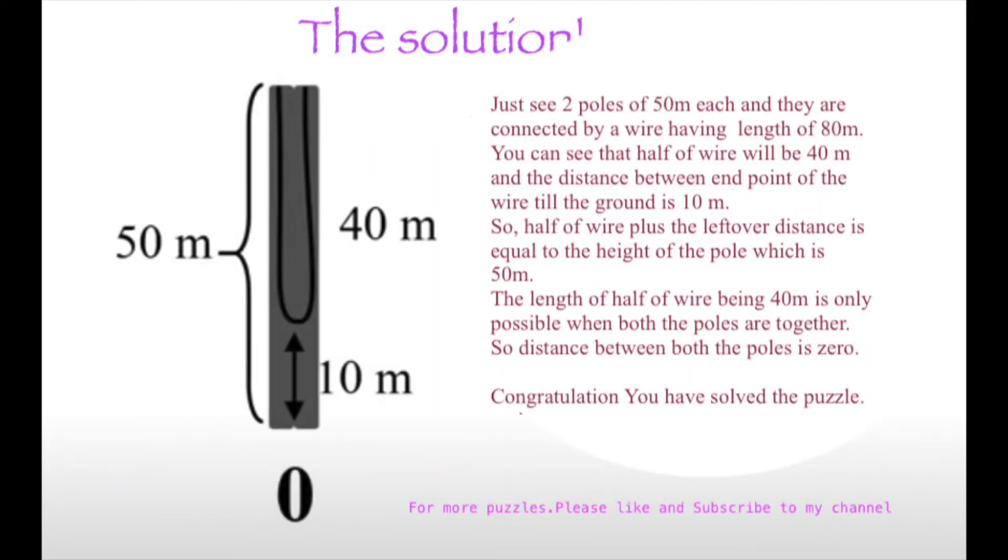Now just see two poles of 50 meters each and they are connected by a wire having a length of 80 meters. You can see that half of the wire will be 40 meters and the distance between end point of the wire till the ground is 10 meters. So, half of the wire plus the leftover distance is equal to the height of the pole which is 50 meters.